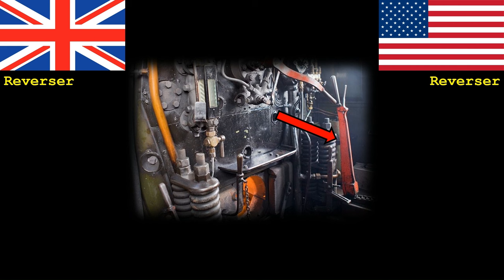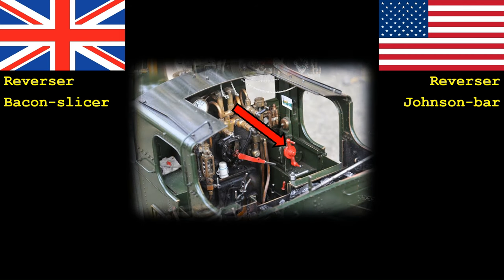The other key piece of equipment is a reverser, as this determines whether the locomotive or engine will be running forward or backwards. Earlier locomotive designs used a lever which in America got the nickname Johnson bar. These were actually banned at some point during the 1930s, and all steam engines built afterwards required a screw reverser. Oddly enough in the UK this screw reverser somehow got the nickname bacon slicer.